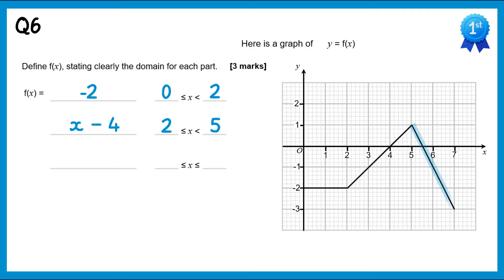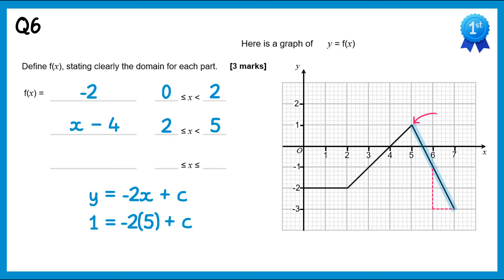For the final piece, it's again a straight line. Drawing a gradient triangle, the gradient is negative 2, so it's of the form y equals negative 2x plus c. We pick the point (5, 1) and substitute: 1 equals negative 2 times 5 plus c, giving c equals 11. So the final part is negative 2x plus 11, for x values from 5 to 7.